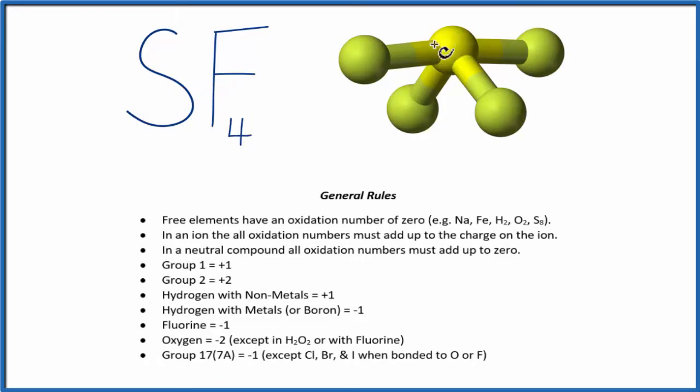So the yellow in the center, that's the sulfur, and then we have one, two, three, four of these fluorine atoms here.